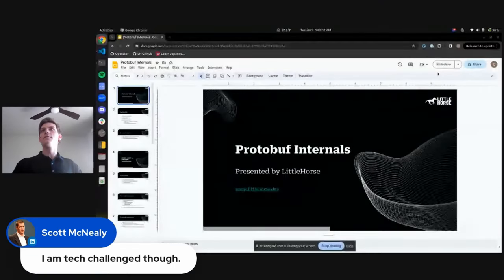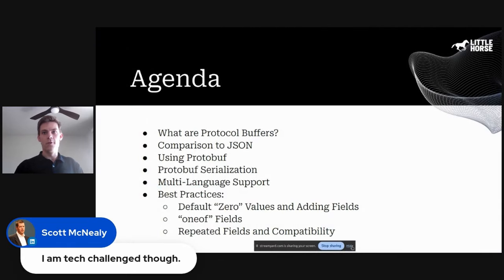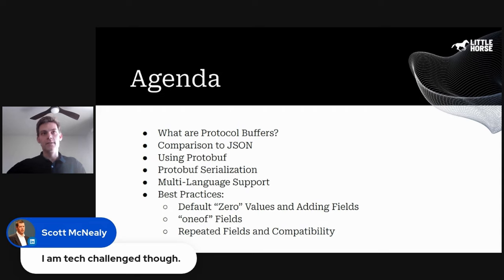We'll start with a brief overview of what protocol buffers are, how they're different from JSON, and how to use them. Then we'll go into a deep dive of the wire format and how protocol buffers take a Java object or Golang struct and serialize it into bytes that can be written over the wire. That's very important when you try to understand best practices for how to use protobuf to ensure that when you change your data format, you don't break old clients and you allow new clients to add new information without breaking anything.